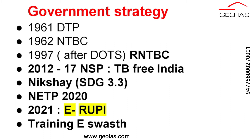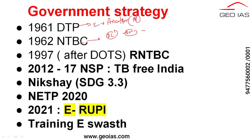The Government of India started strategies even from 1961 itself. In 1961, they launched a program called the District TB Program. The first district where they conducted this strategy was Anantapur in Andhra Pradesh. Later, they updated this into the National Tuberculosis Control Program, focusing on district level management and the supplying of drugs.